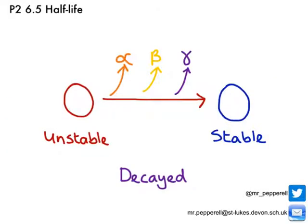Now a quick recap to start here. We know that every atom of a particular element has the same number of protons, but the number of neutrons can vary in different isotopes of an element. And a radioactive isotope, sometimes called a radioisotope, which is unstable, can become stable by emitting radiation. And we call that process decay.